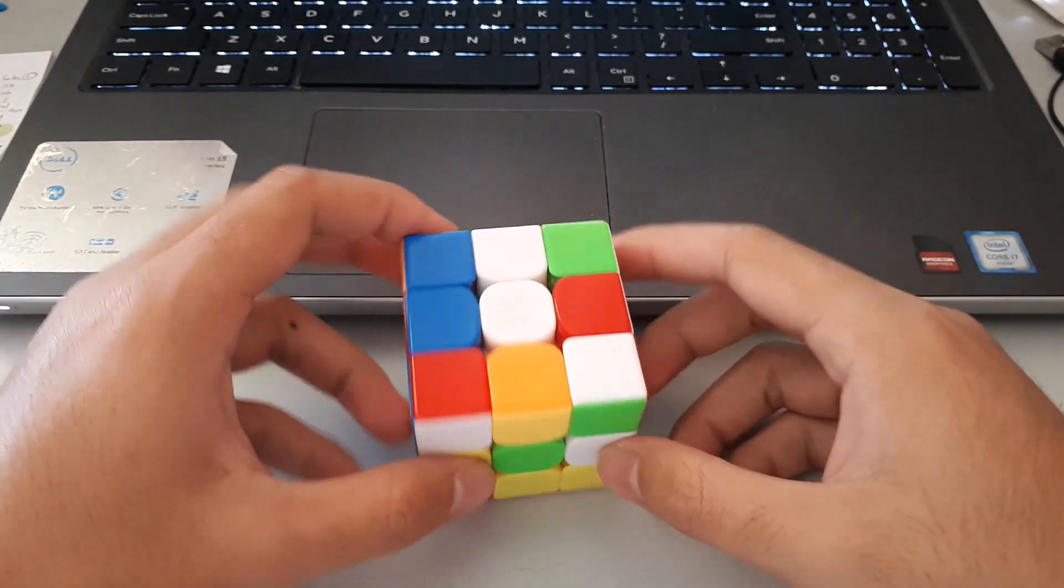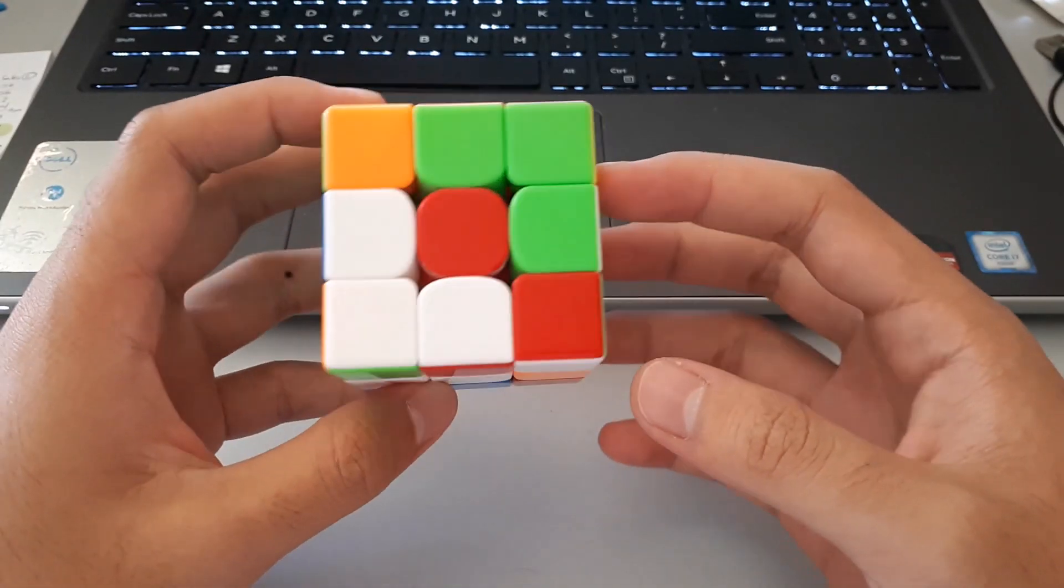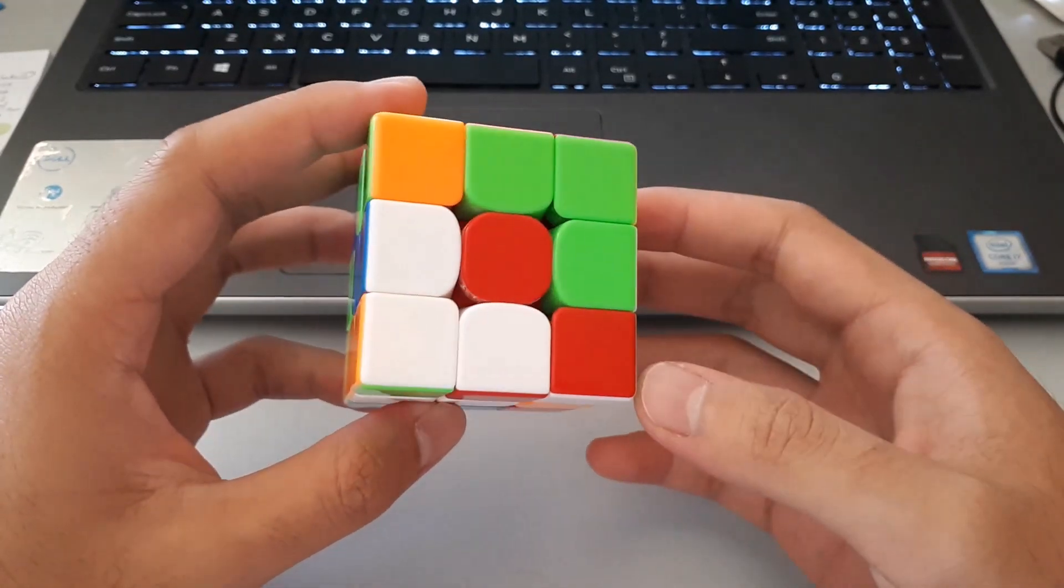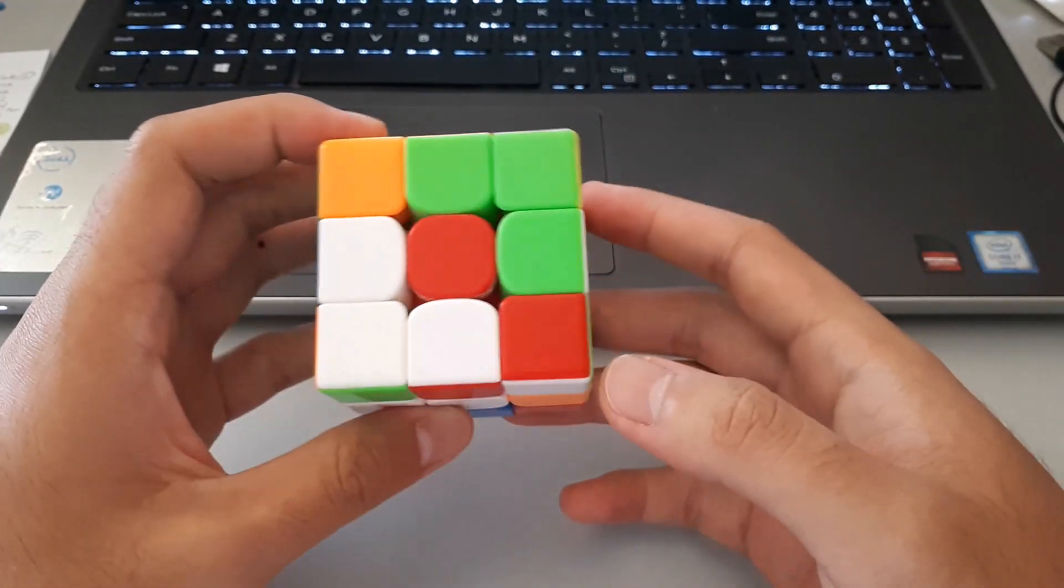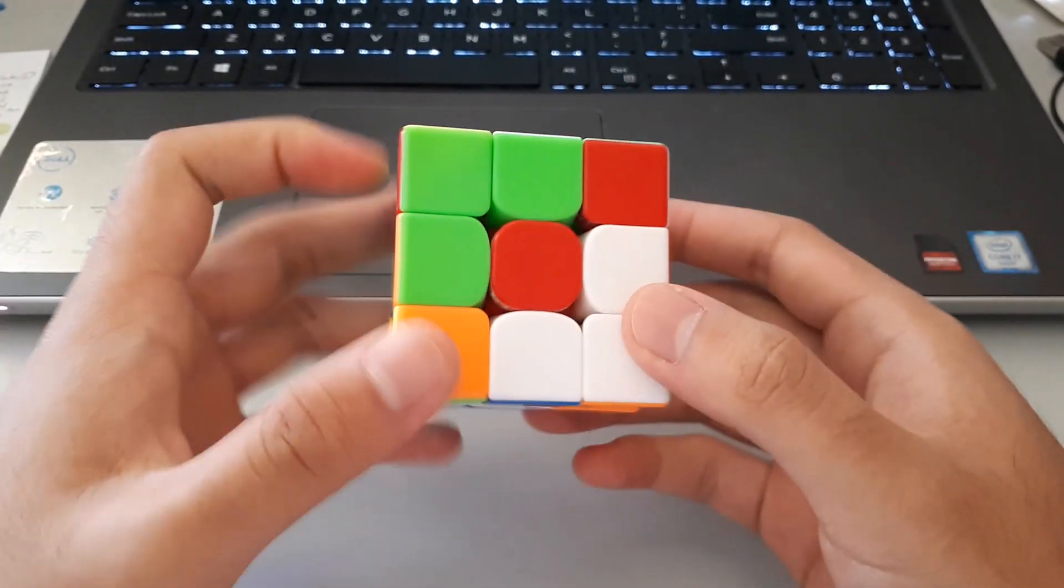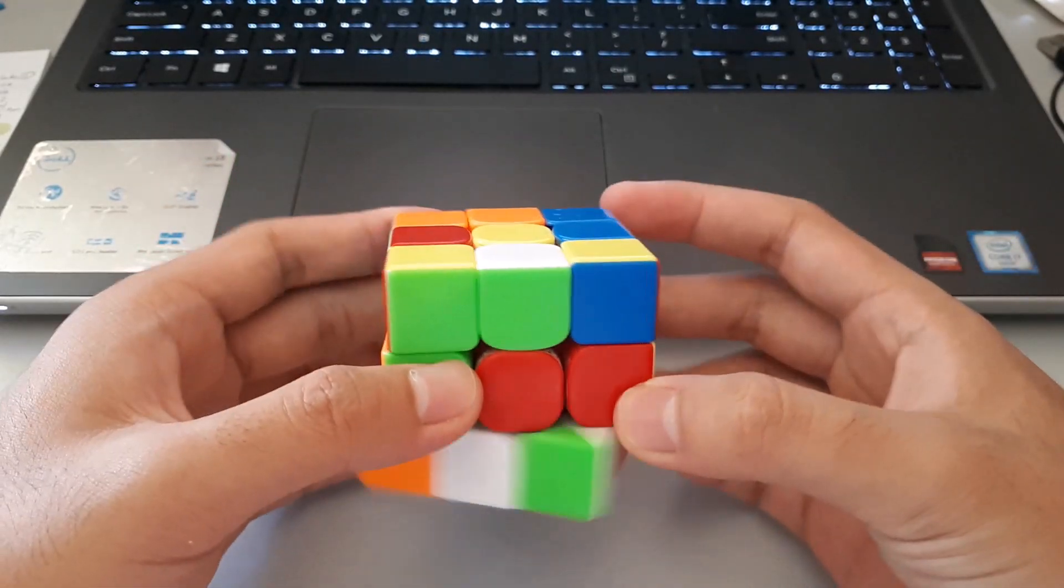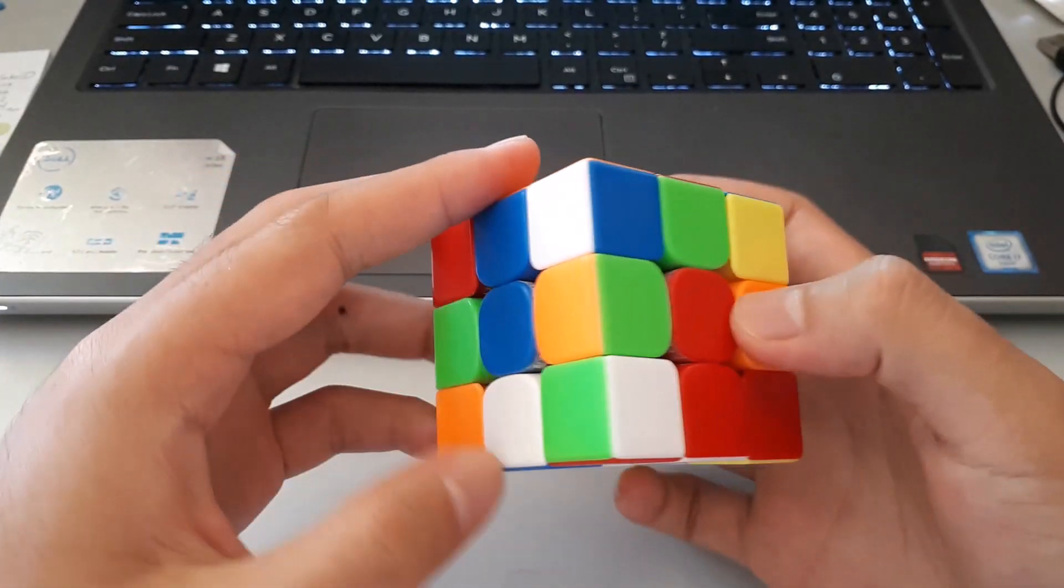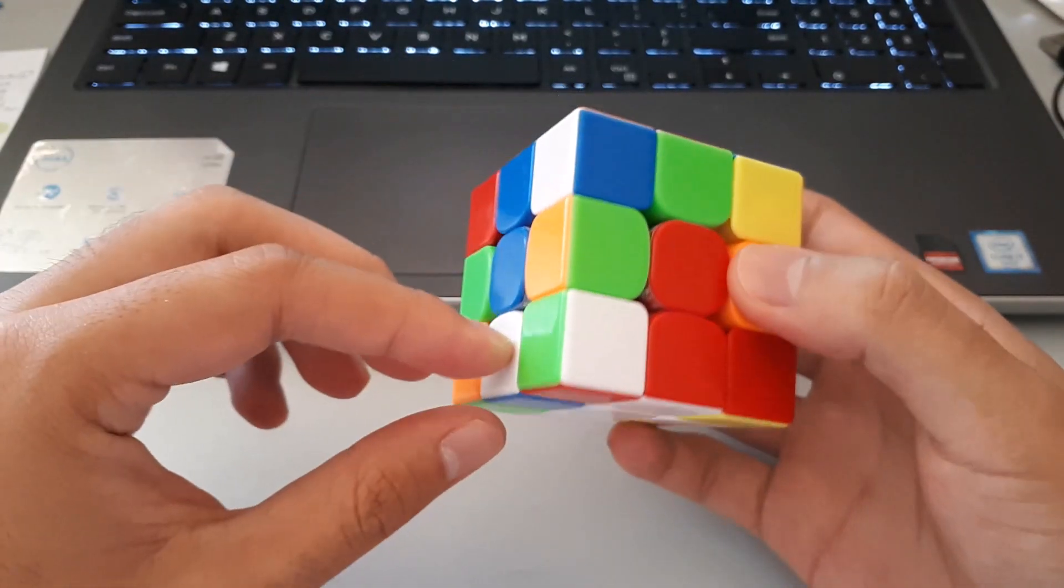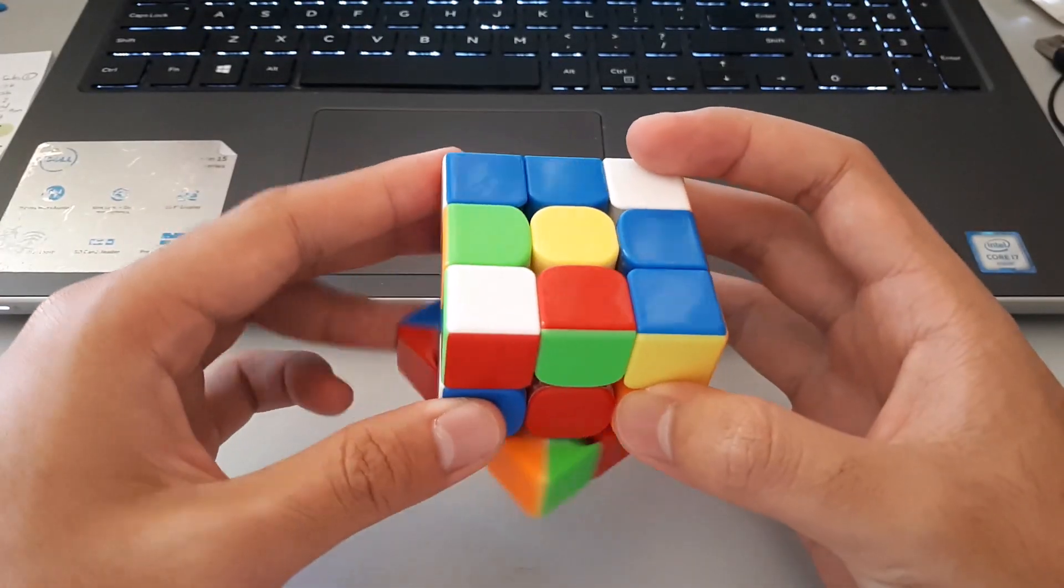So for the second scramble, I noticed that red and orange can be set next to each other, but it's not the best white cross. So I'll probably just start off by setting red and orange opposite to each other. And then here I'll probably do this move to insert green, and I'll probably just fix up blue by itself, looking into my first F2L pair here.